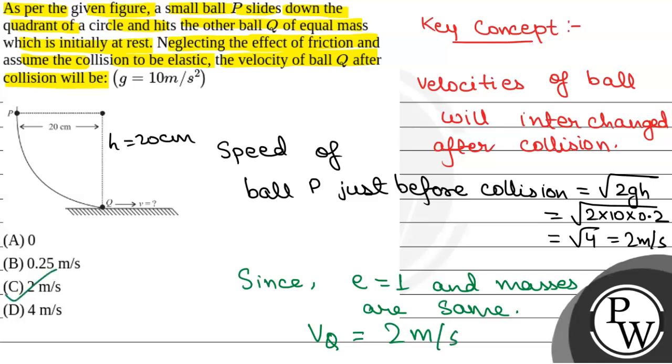So, the velocity of Q after collision will be 2 meter per second. This will be the final answer. The correct option is option C. Thank you all and best of luck.